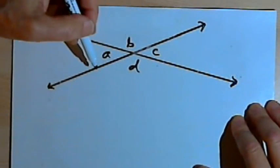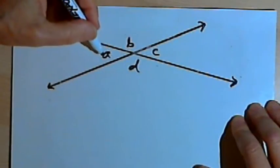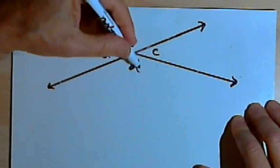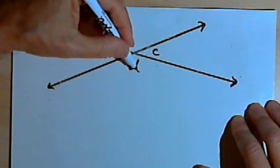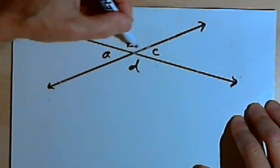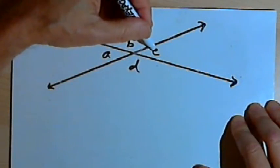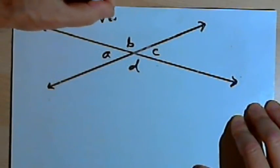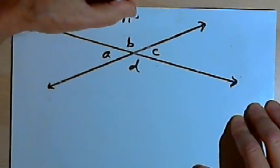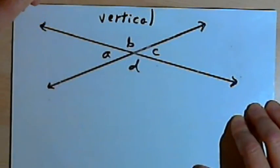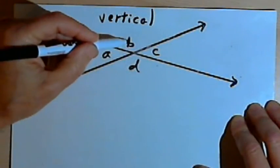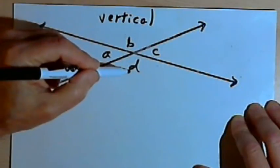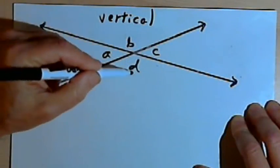I've drawn two intersecting lines, and at the place where they intersect I've labeled the four angles A, B, C, and D. Now angle A is opposite to angle C. When we have two angles that are opposite each other, we call them vertical angles. I've got two other vertical angles here. Angle B is opposite to angle D, so they're also vertical angles.